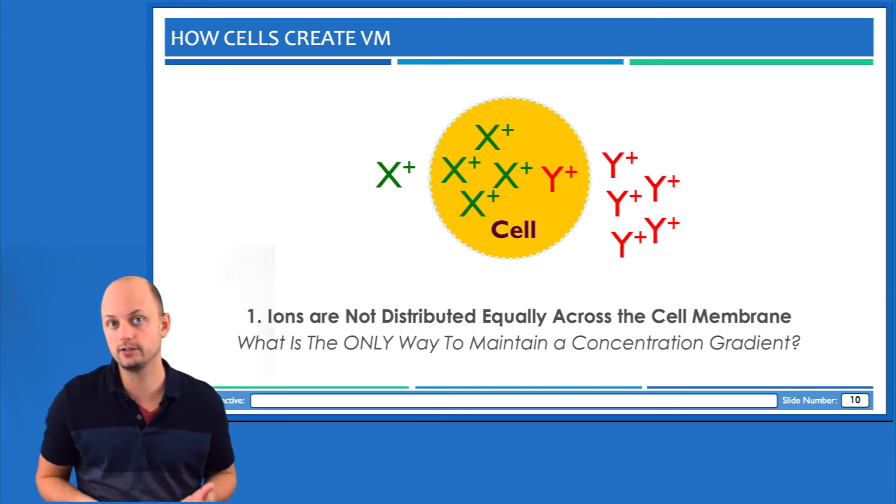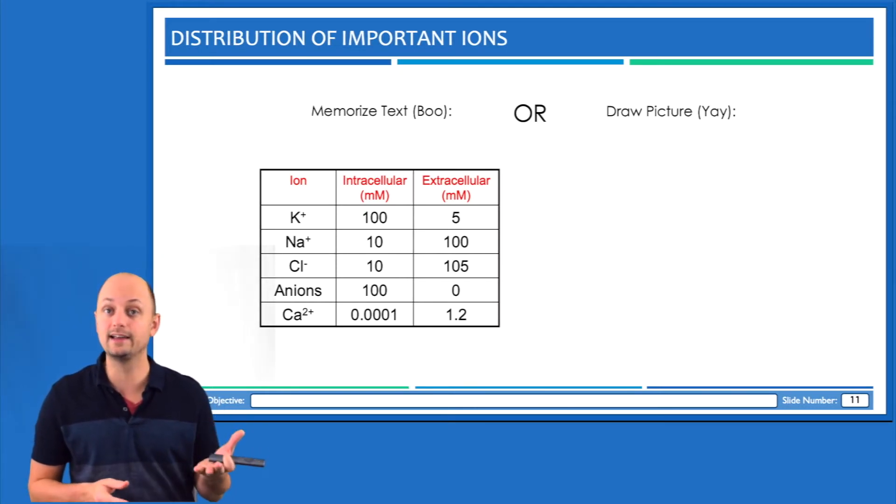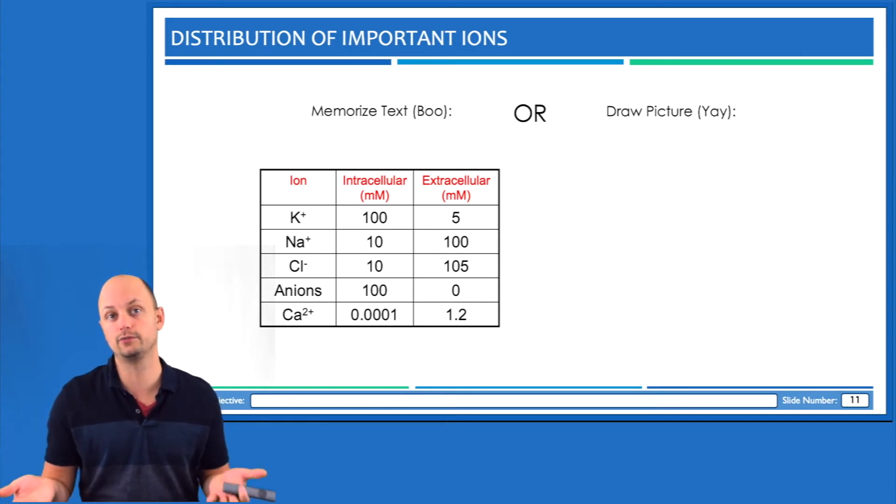Now there are a lot of biologically important ions, but the four big ones are listed in this table: potassium, sodium, chloride, and calcium. In this unit actually, the top three are potassium, sodium, and chloride. They're particularly important for muscle and for neurons.